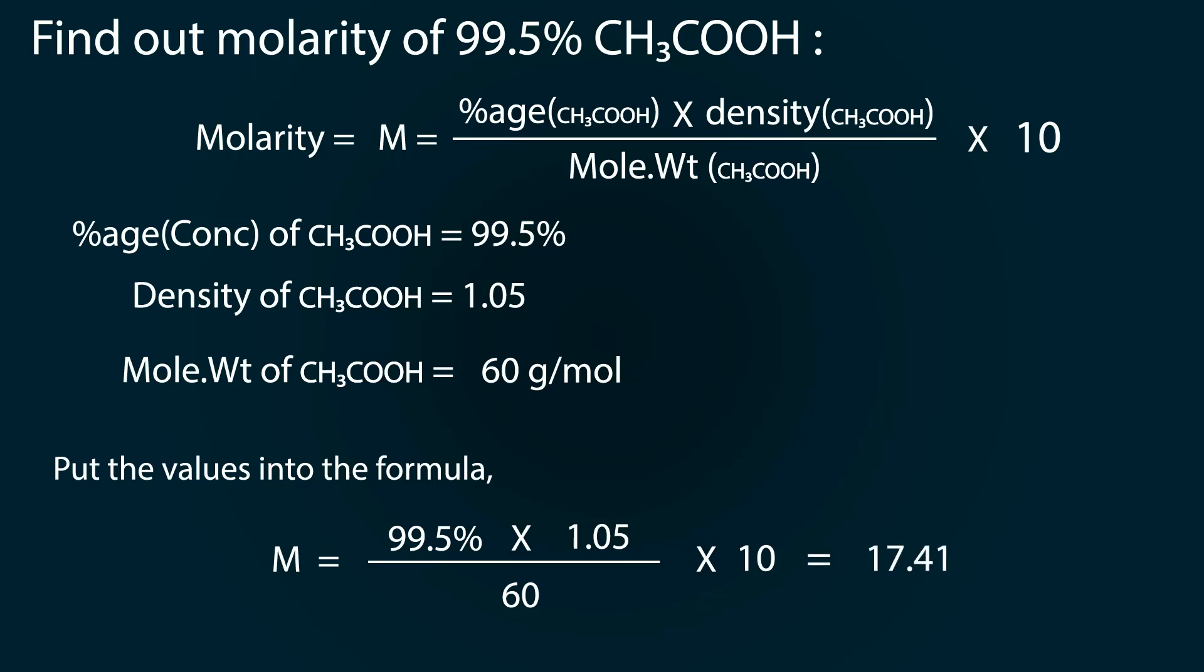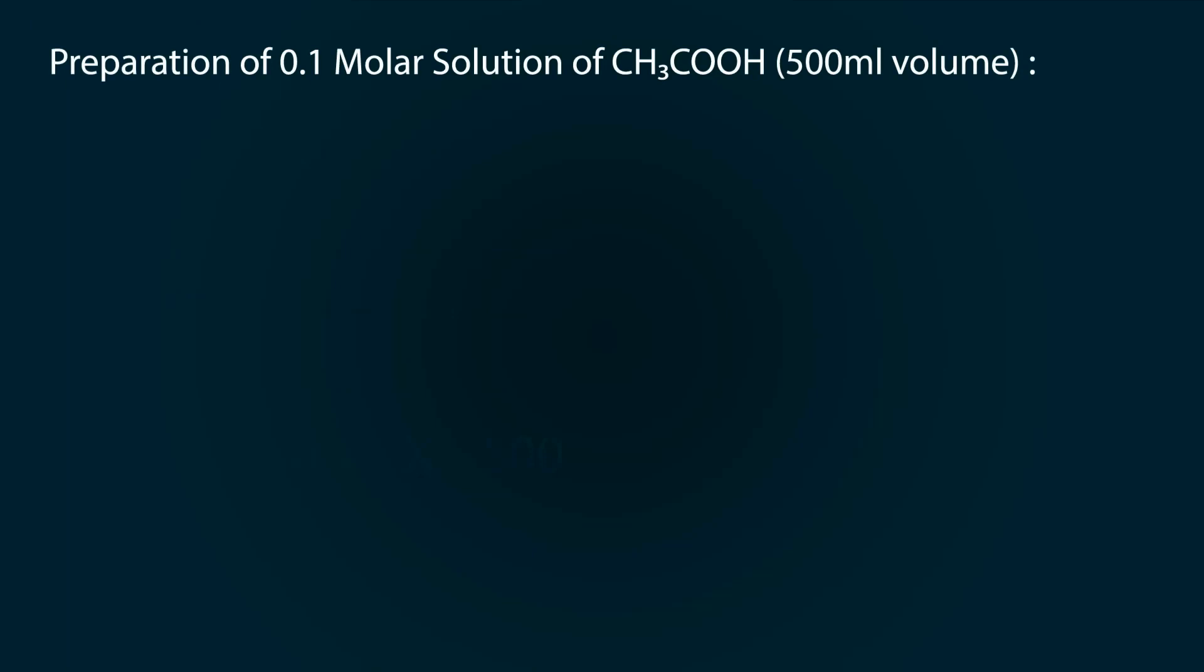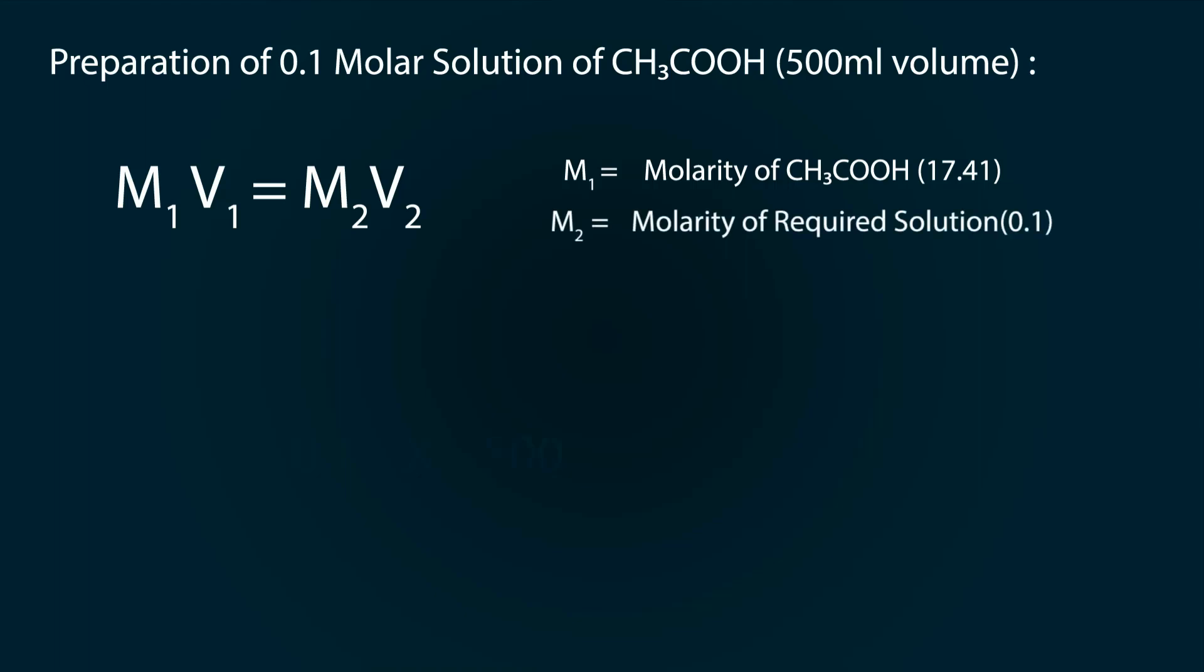For the preparation of 0.1 molar solution, we have to use dilution formula: M1V1 is equal to M2V2, where M1 is the molarity of acetic acid 17.41, M2 is the molarity of our required solution which is 0.1.